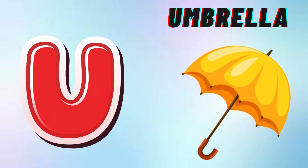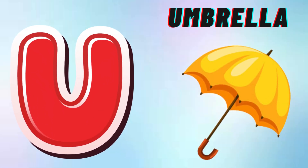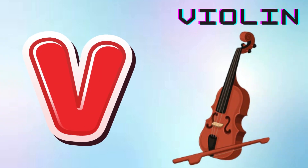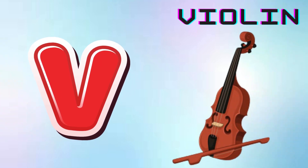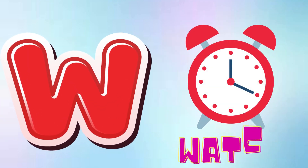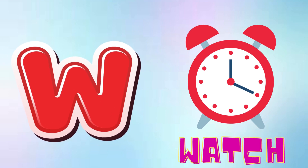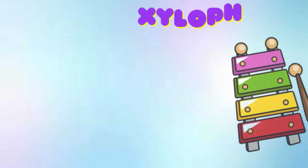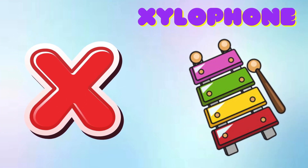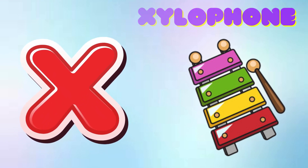U is for Umbrella, U-U-Umbrella. V is for Violin, V-V-Violin. W is for Watch, W-W-Watch. X is for Xylophone, X-X-Xylophone.